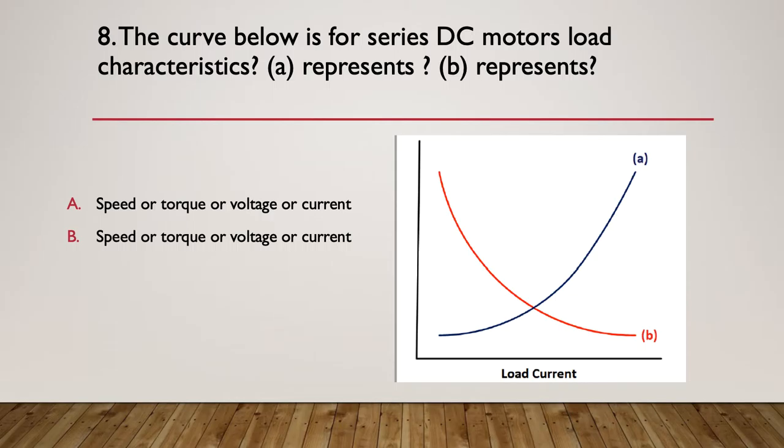Question nine: The curve below is for a series DC motor load characteristic. Curve A represents what? Curve B represents what? So we've got a choice. Is A speed or torque or voltage or current? Is B speed, torque, or voltage or current? So we're trying to determine what the vertical axis is at its scale. You can see from the diagram that the horizontal scale is current. So as current goes up, B goes down and A goes up. So what responses would they be?